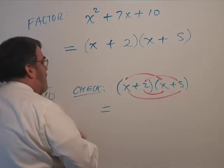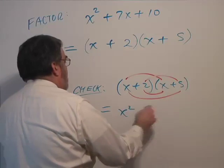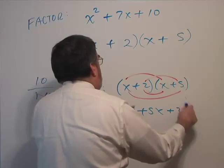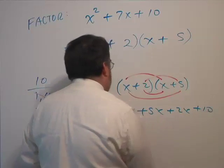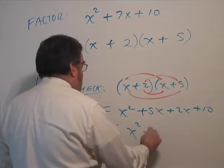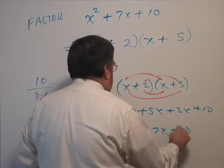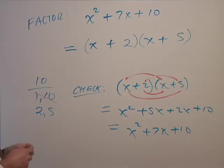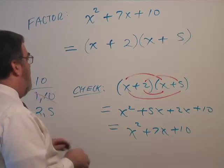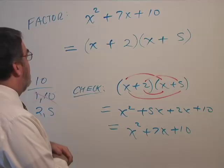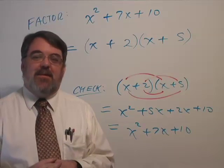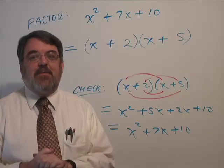x squared plus 5x plus 2x plus 10. So I had x squared plus 5x plus 2x plus 10. And that gives me x squared plus 7x plus 10 when I combine the terms, which is what I started with. So that is factored correctly. Well, it's going to get a little bit worse. So I'm going to do a few more in this video, but I need to erase the board.